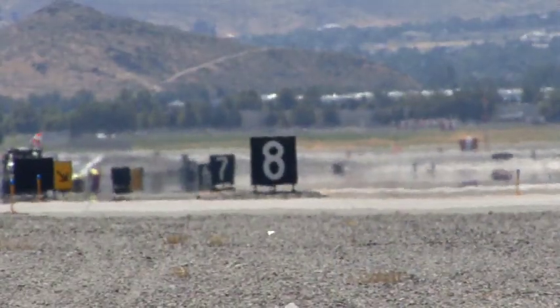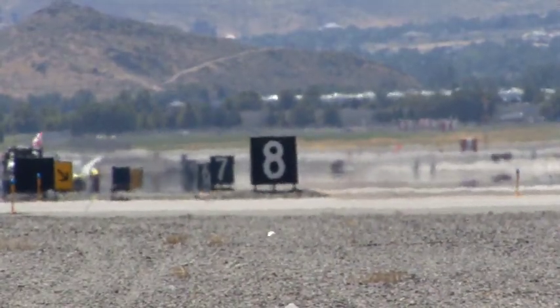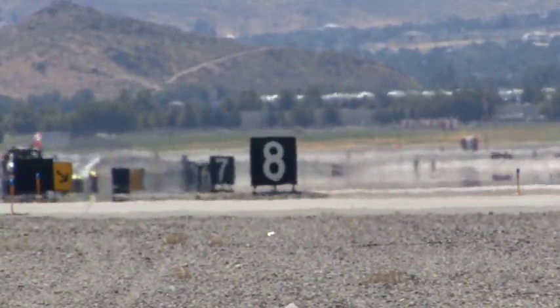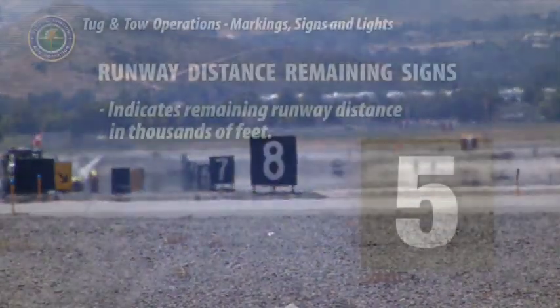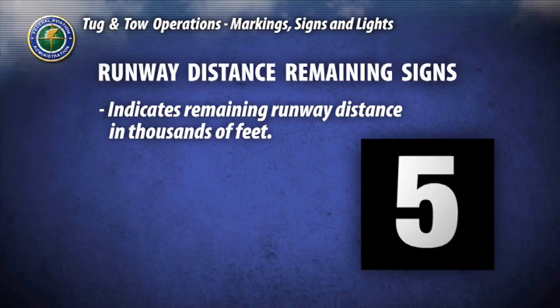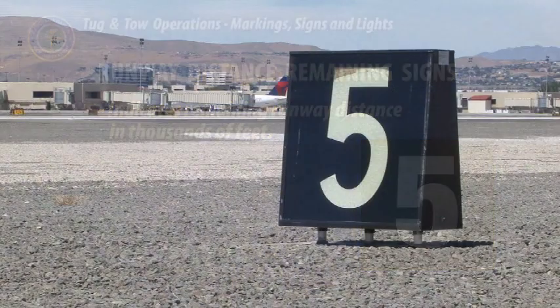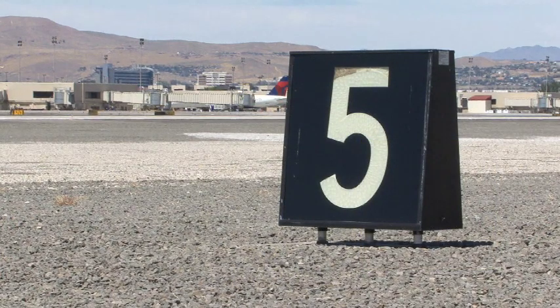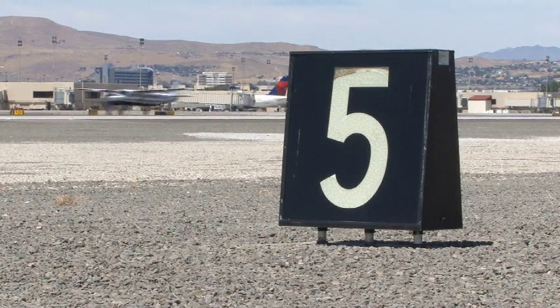Runway distance remaining signs are installed along the sides of runways and indicate the distance of runway remaining in thousands of feet. In this example, 5,000 feet remain on the landing runway.